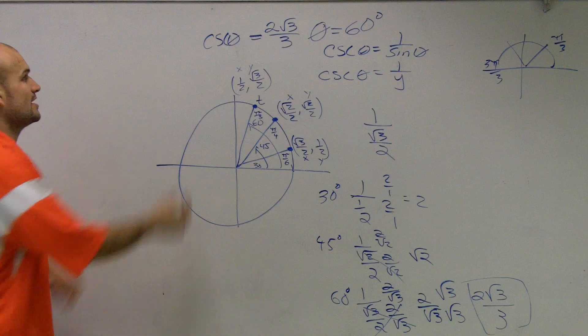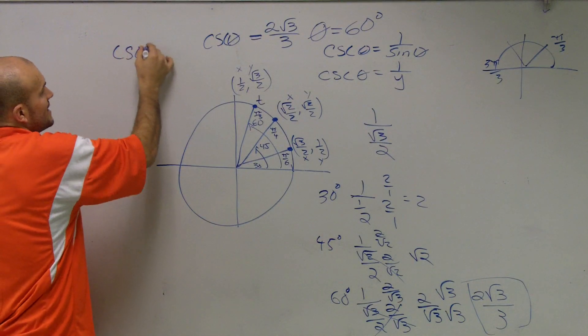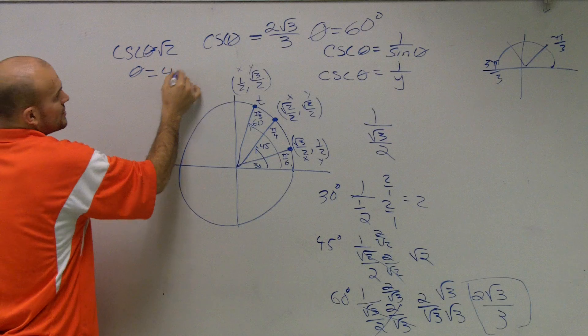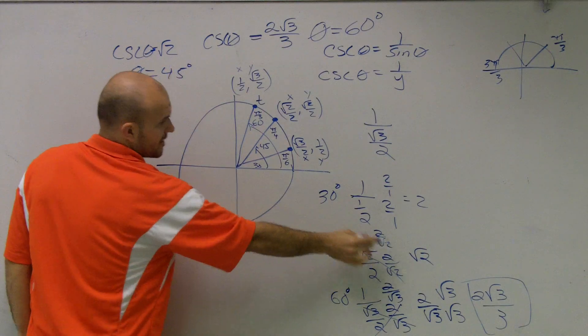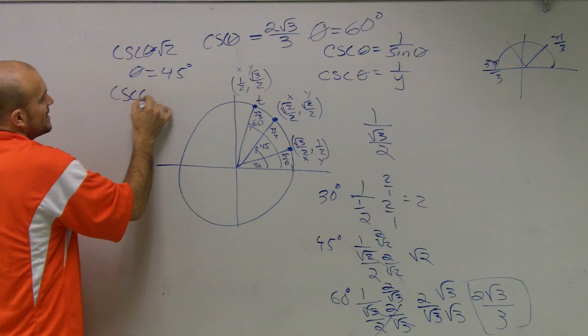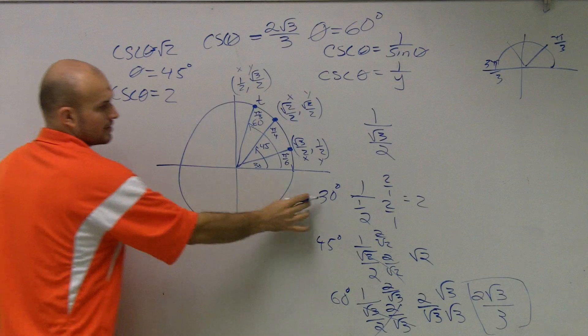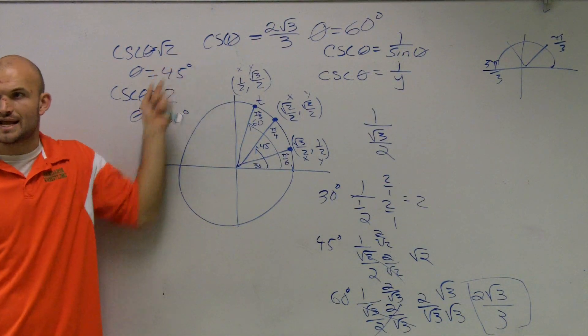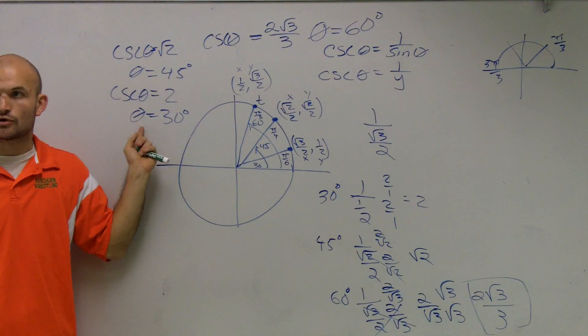Does that make sense? So therefore, guys, if I would have said cosecant of theta equals radical 2, you would have said theta equals 45 degrees. Or if I would have said cosecant of theta equals 2, you would have said theta equals 30 degrees. You guys see how all those answers for theta are different per your coordinate?